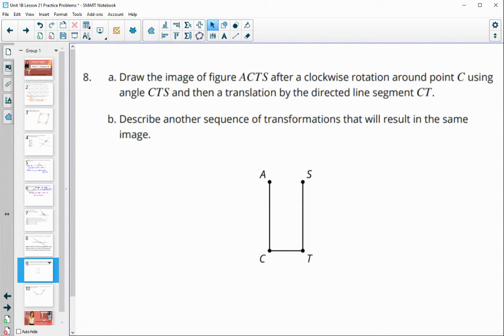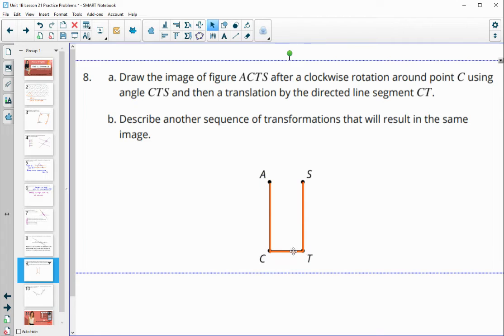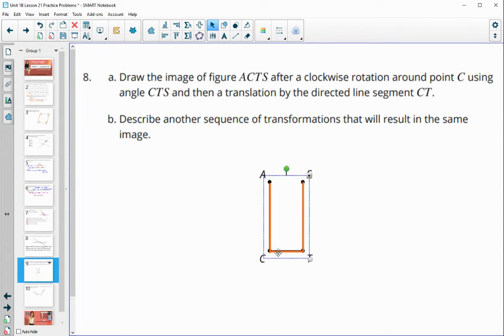Then number eight, draw the image of ACTS. So let me get this drawn on here first. So A, C, T, S. After a rotation around point C. So the fixed point in this case is going to be C. And we're going to rotate it around angle CTS. So we're going to rotate it using angle CTS, which is a 90 degree rotation. So we're going to leave point C in a fixed spot.